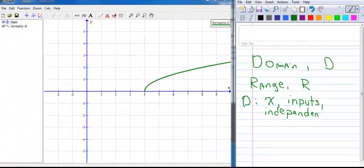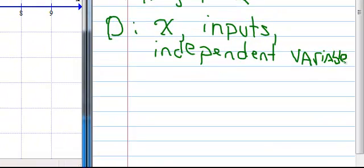You can also think of it as your independent variable. So it's not always X, sometimes it's T, and sometimes it's H, and all sorts of things. So independent variable.